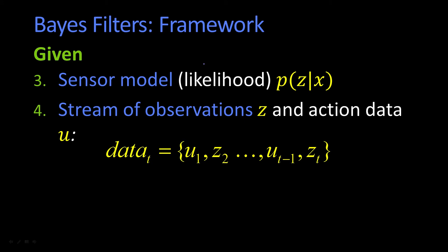And then finally, we're given the stream of observations, the z's. So, z1 through zt minus 1, or through zt. And also, we know the actions. So, we know the action data u, u1 through zt minus 1. So, those are the four things that we have.